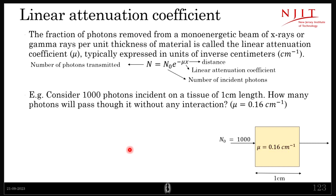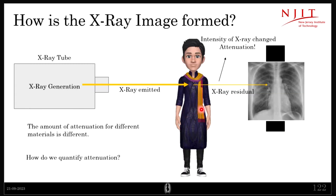The linear attenuation coefficient is the key concept here. If there is more attenuation, there is a dark spot; if there is less attenuation, there is a bright spot. Because we have different elements in our body, we get different amounts of attenuation and therefore different regions in the resulting image.